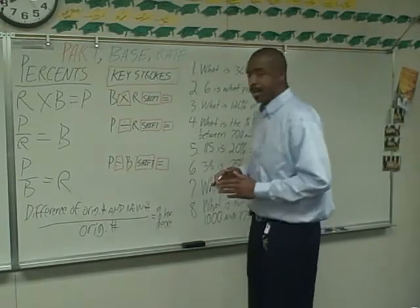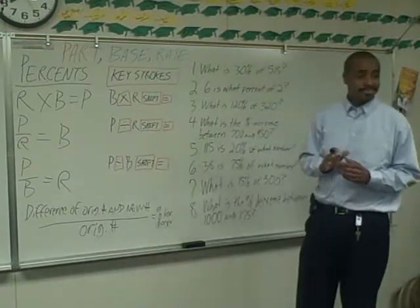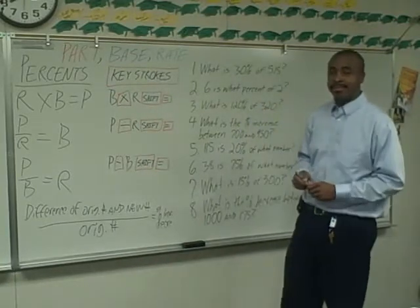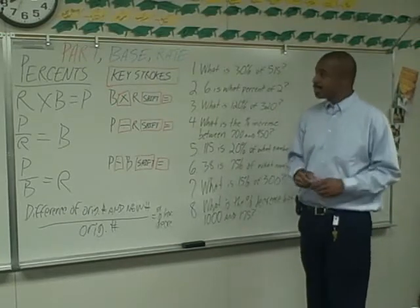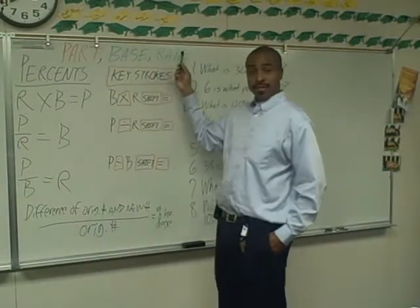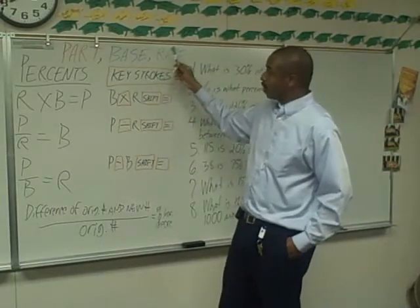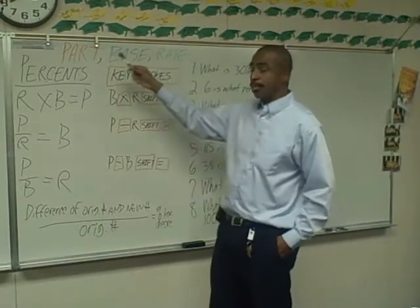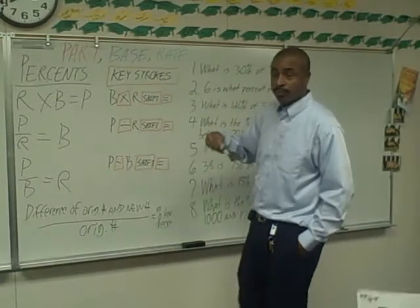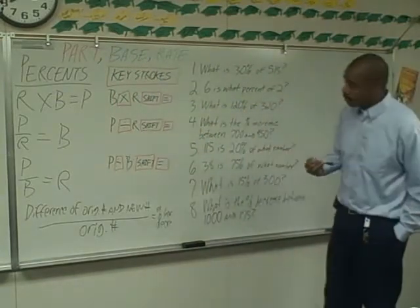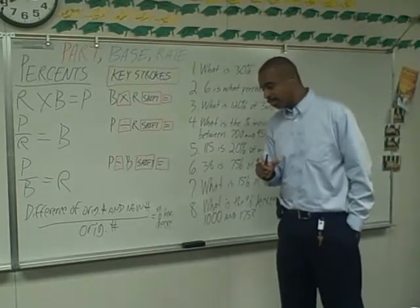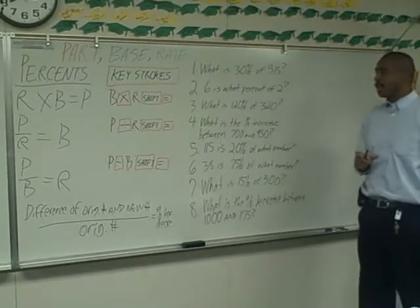What makes it a percent problem is that it's missing something. You're either going to have the part and the base and have to solve for the rate, or you're going to have the base and the rate and have to find the part, or you're going to have the part and the rate and be looking for the base. You have two pieces and you're looking for the third piece to complete the question.